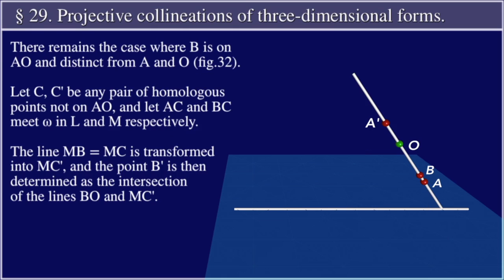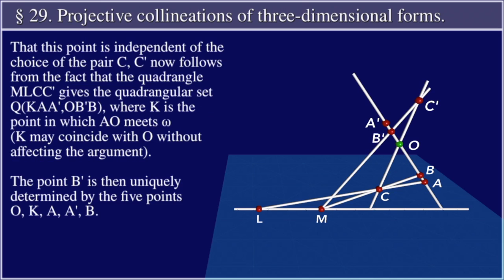There remains the case where B is on AO and distinct from A and O, figure 32. Let C, C prime be any pair of homologous points not on AO, and let AC and BC meet omega in L and M respectively. The line MB equals MC is transformed into MC prime, and the point B prime is then determined as the intersection of the lines BO and MC prime. That this point is independent of the choice of the pair C, C prime